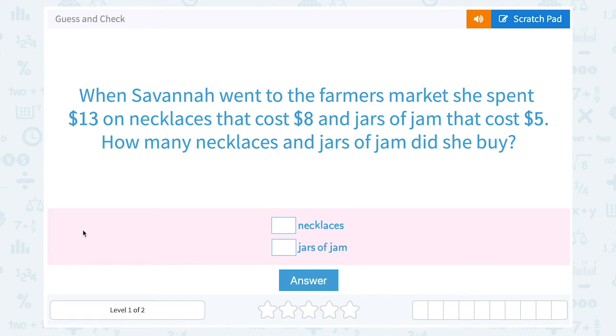Let's take a look at guess and check. When Savannah went to the farmer's market, she spent $13 on necklaces that cost $8 and jars of jam that cost $5. How many necklaces and jars of jam did she buy?